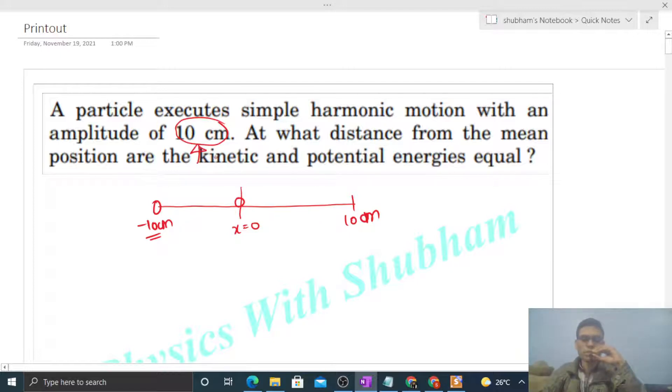Where potential energy and kinetic energy have the same value. So you see, potential energy at distance x will be half of k into x squared. Kinetic energy will be half of k into a squared minus x squared. These values you should know.